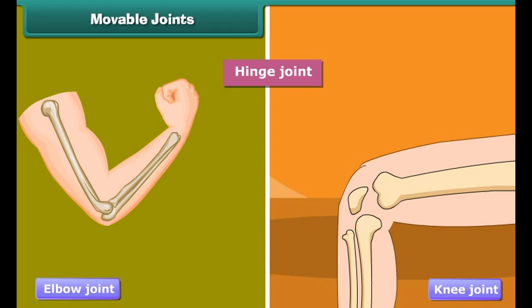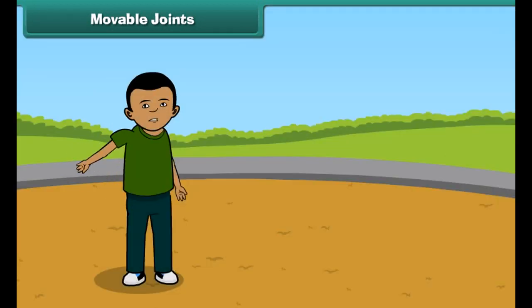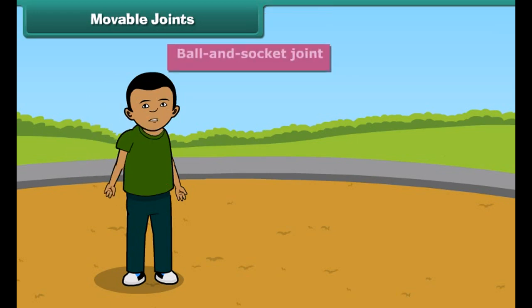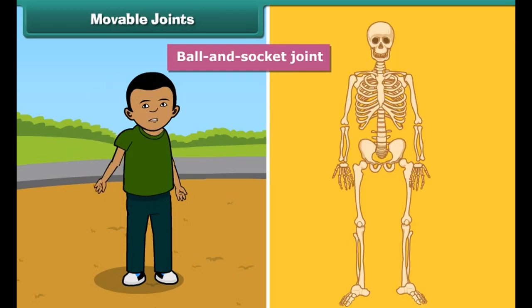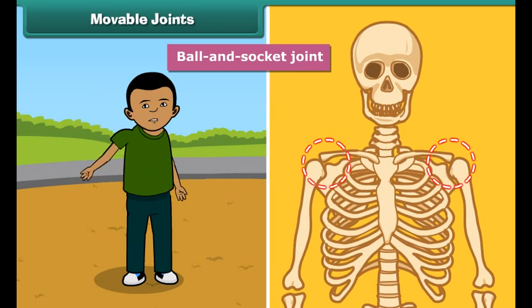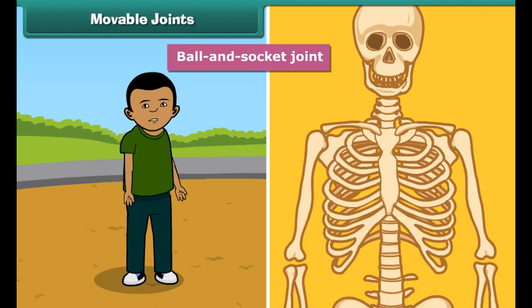Moveable joints are grouped into four types on the basis of movement. Come, let us discuss each type in detail. Hinge joint: these are the joints which can be bent in only one direction. For example, elbow joint and knee joint.